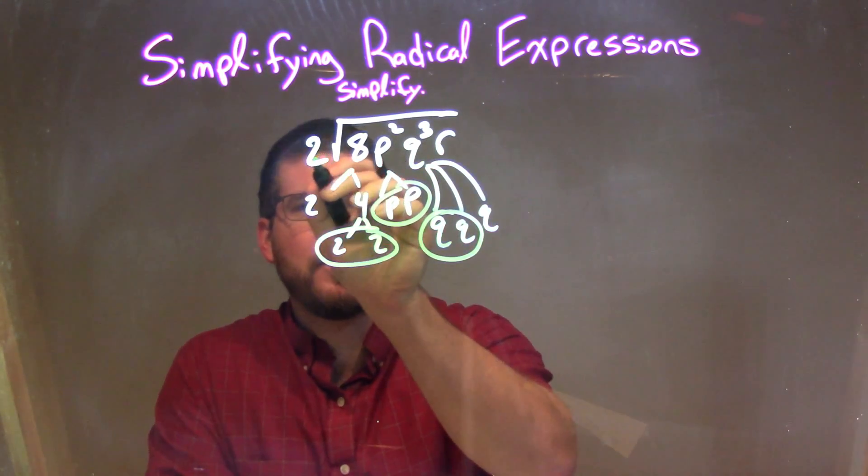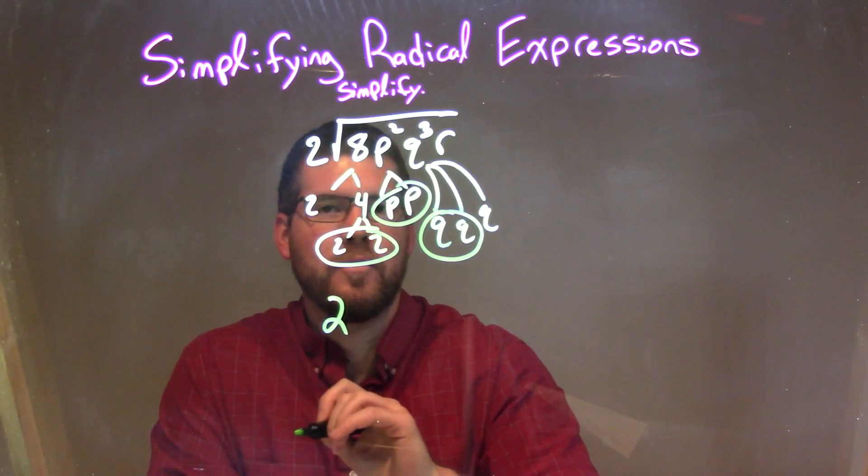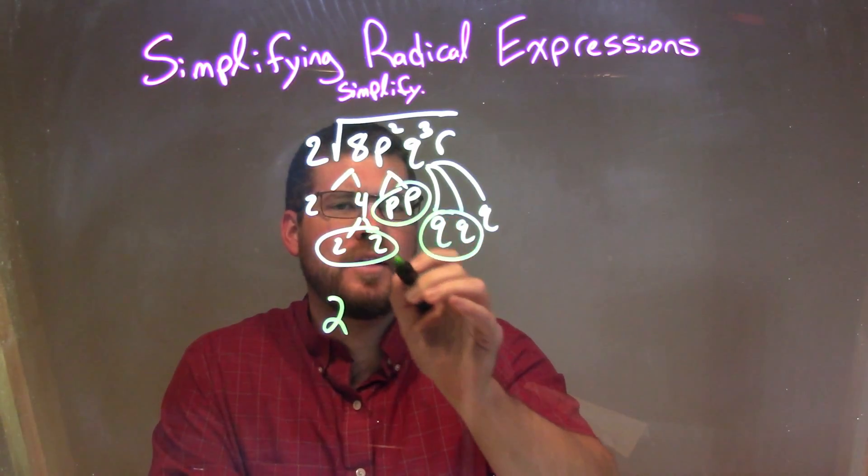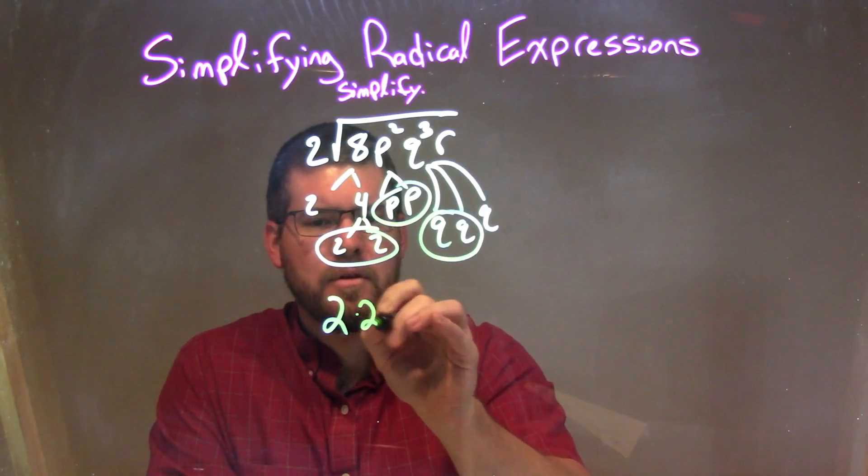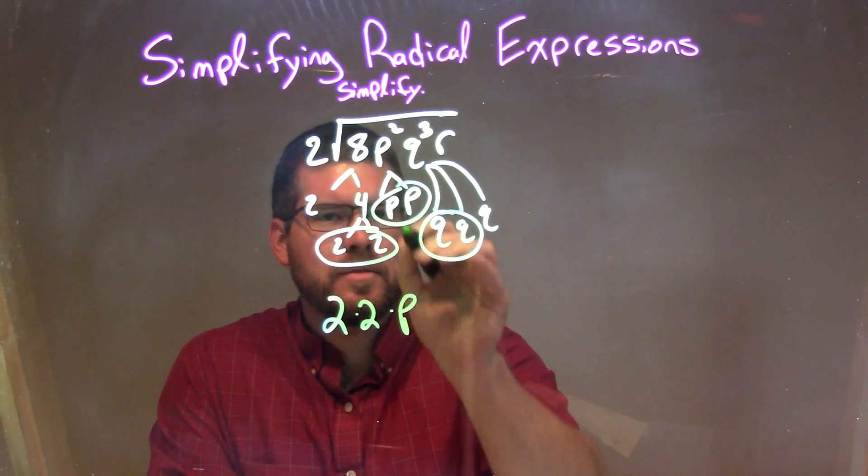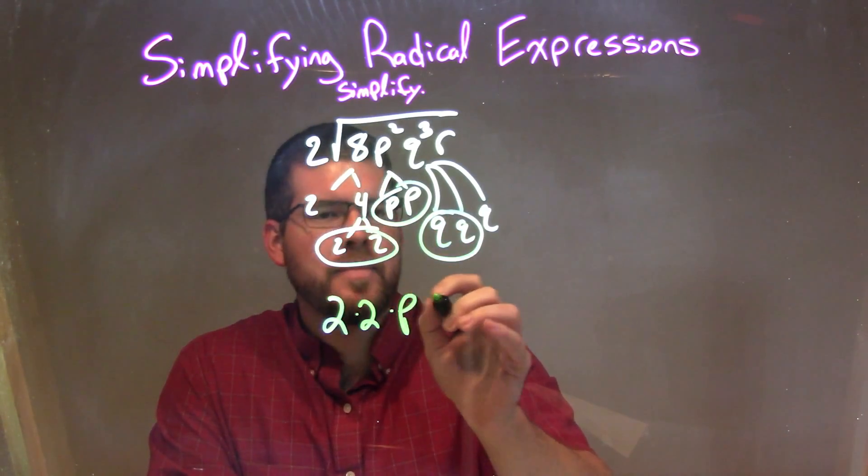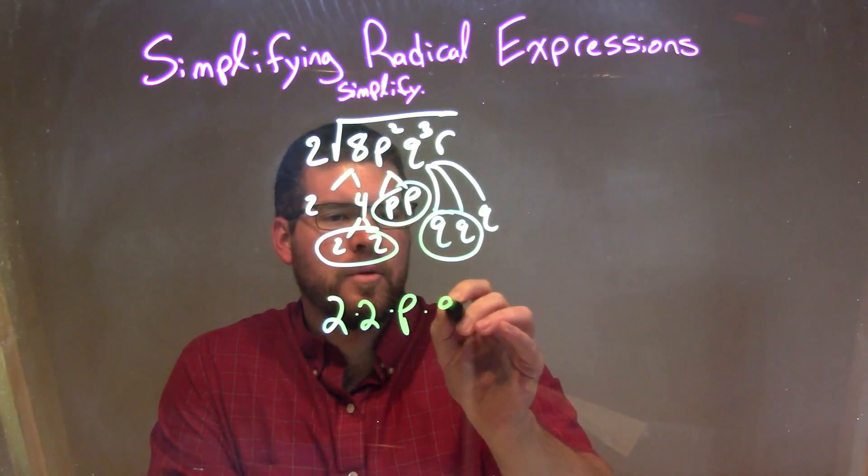So now when I rewrite this, this 2 comes to the outside of my square root, and then each pair represents one element on the outside. So the pair of 2s becomes one 2, pair of p's becomes one p, and pair of q's becomes one q on the outside.